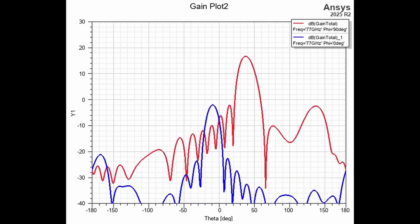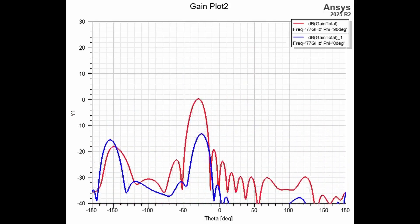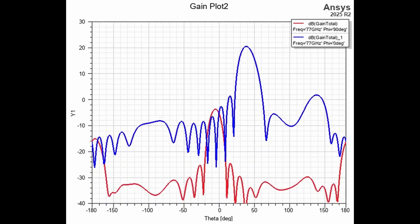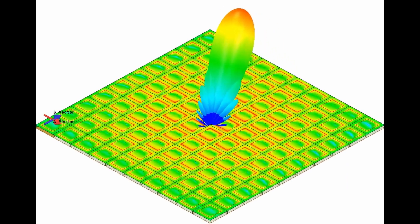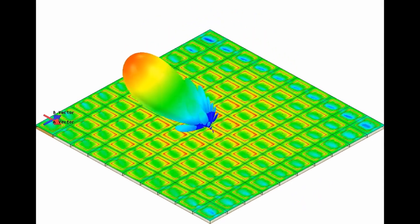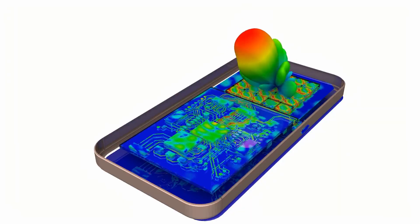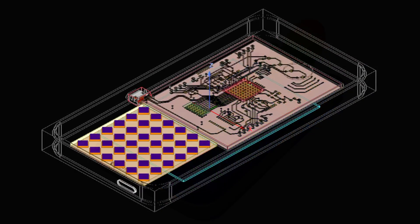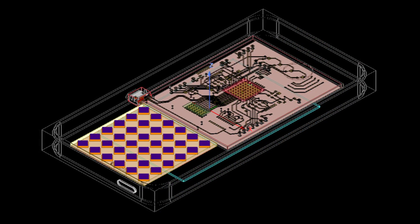First, we start with accelerating array analysis like never before. Antenna engineers can now compute radiation patterns up to 17 times faster. This speed up transforms beam streaming analysis for telecom, aerospace, and defense, cutting simulation time and accelerating design cycles significantly.